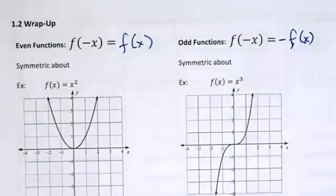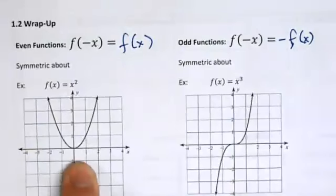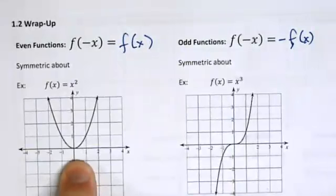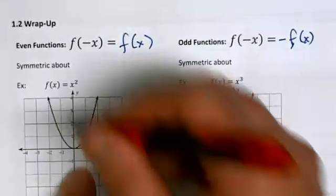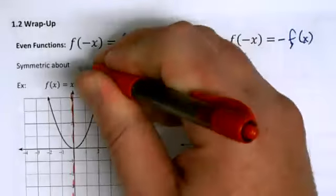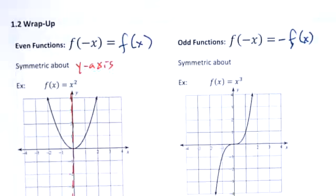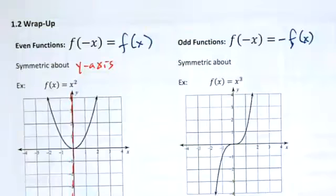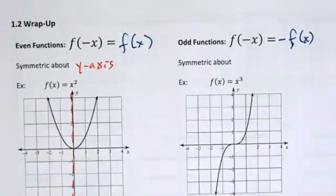This is strongly linked to symmetry. An even function — like the quadratic — is symmetric about the y-axis. The cubic function is an example of an odd function; it has symmetry about the origin, a very special point.